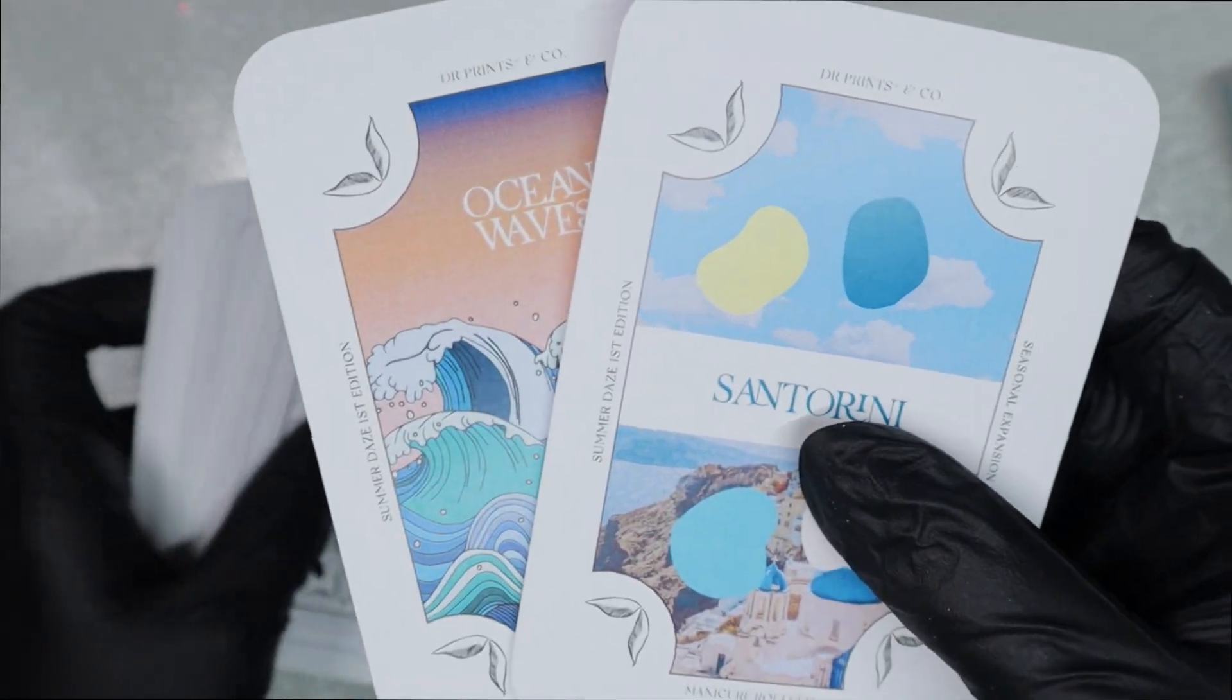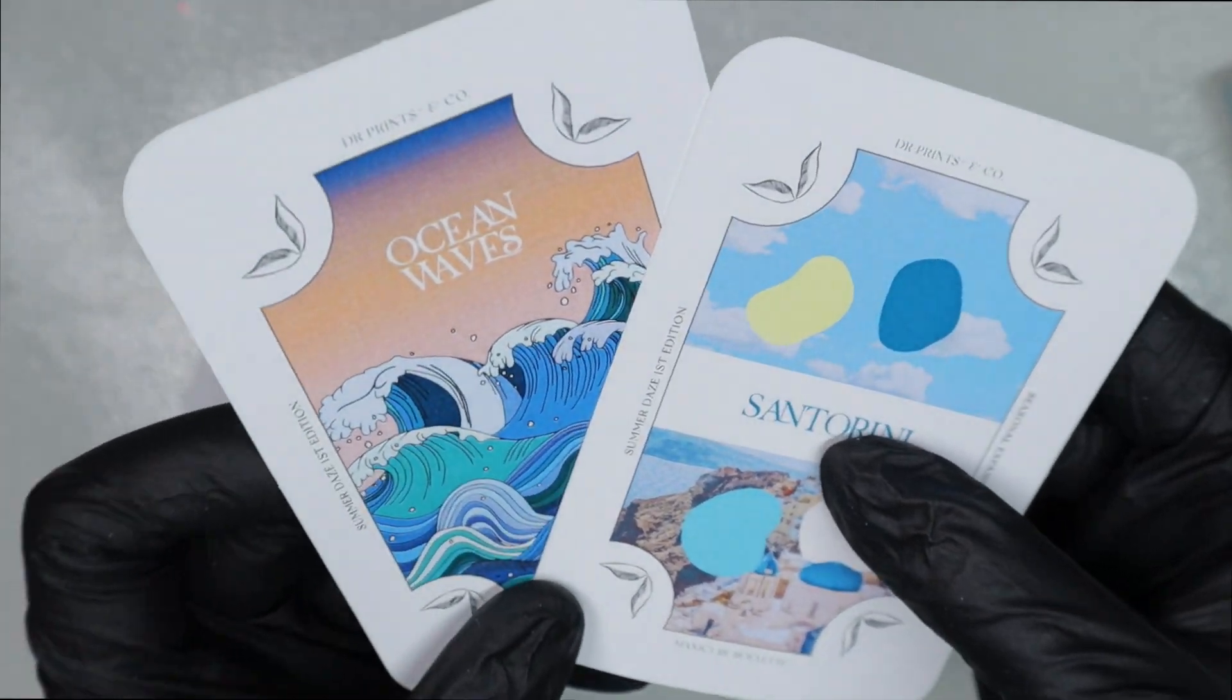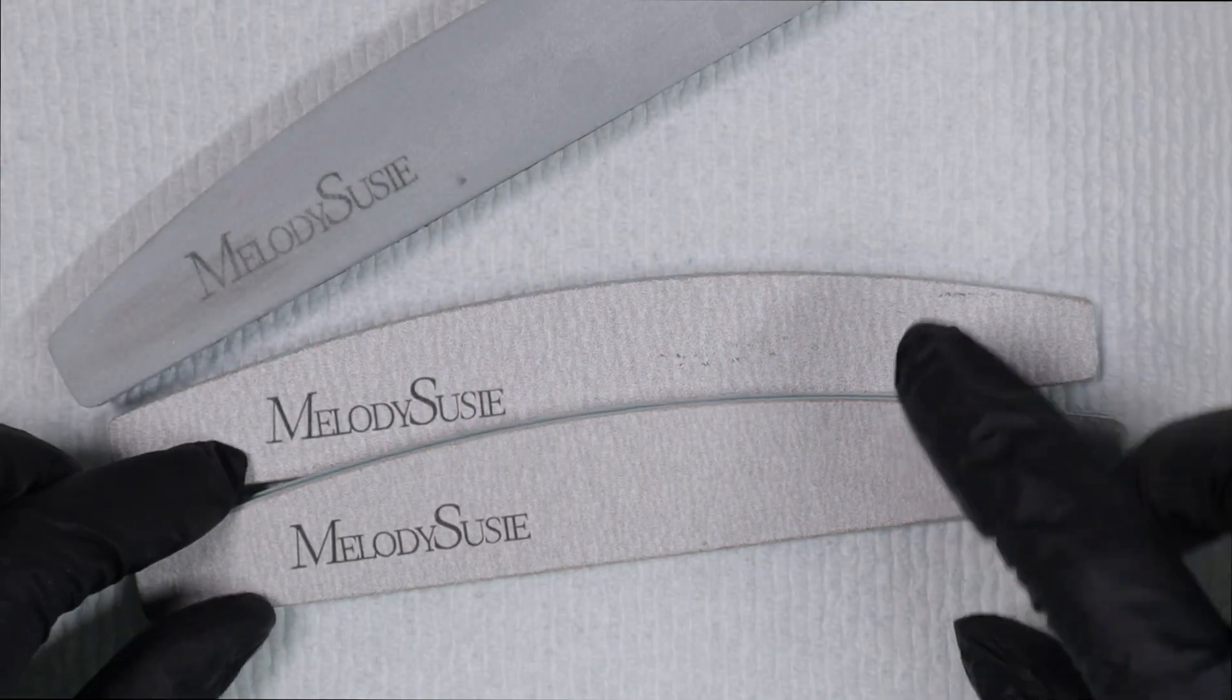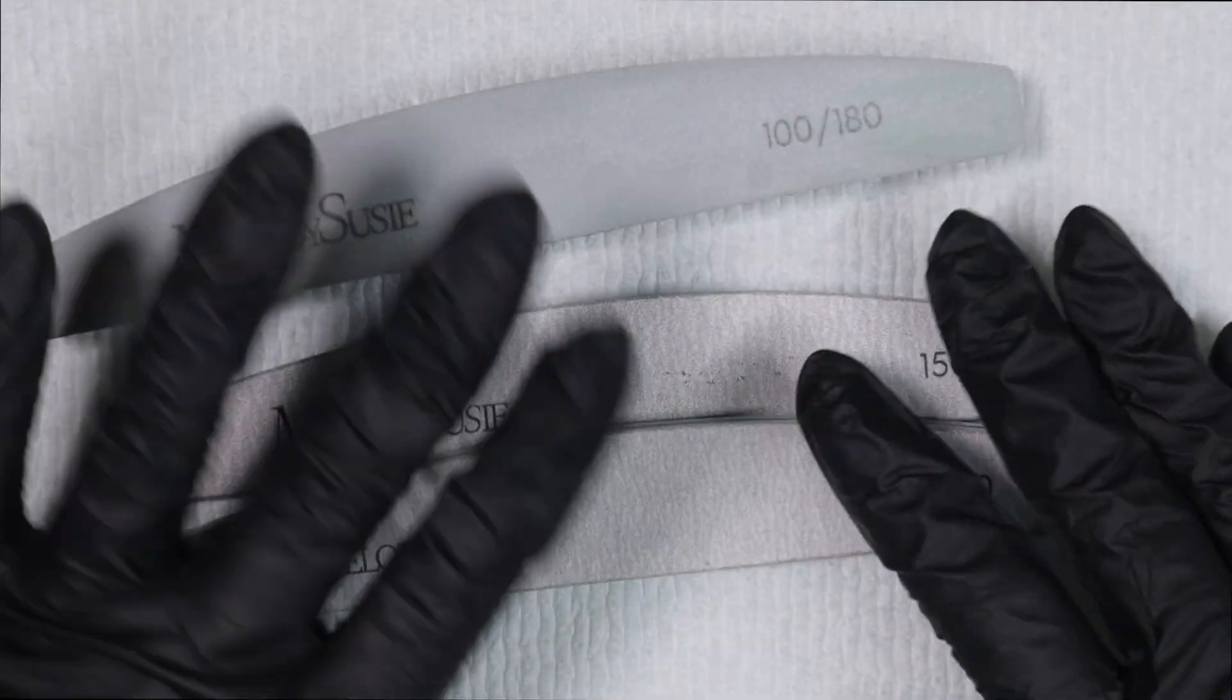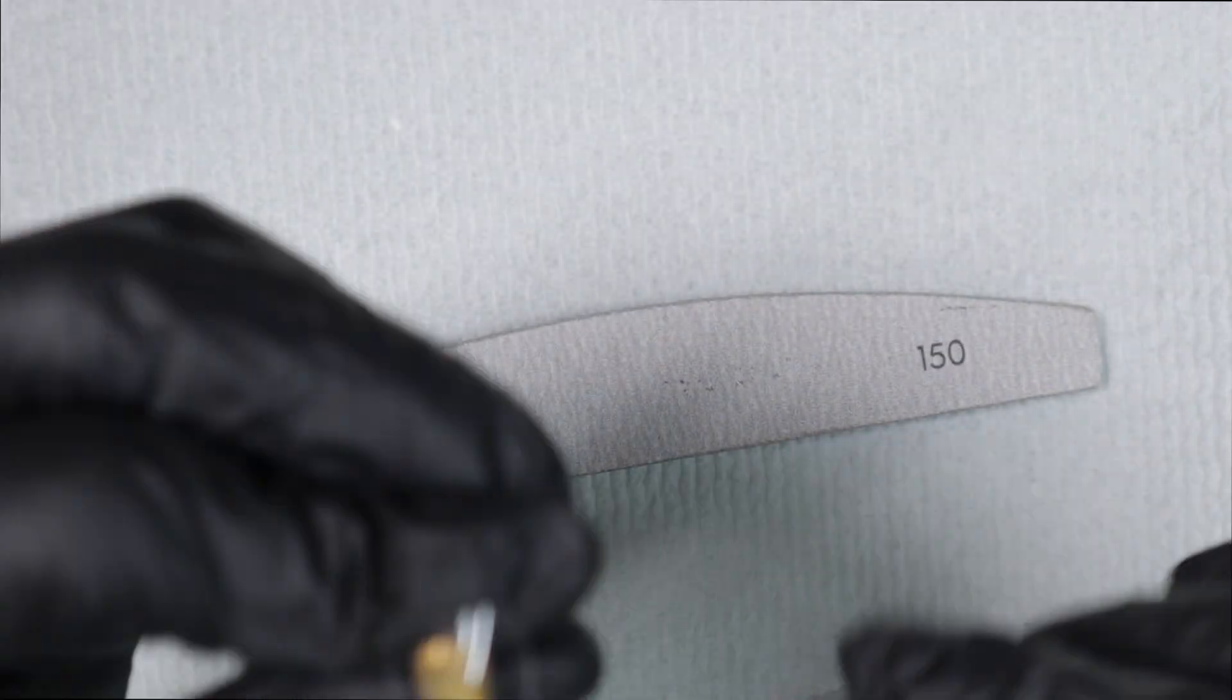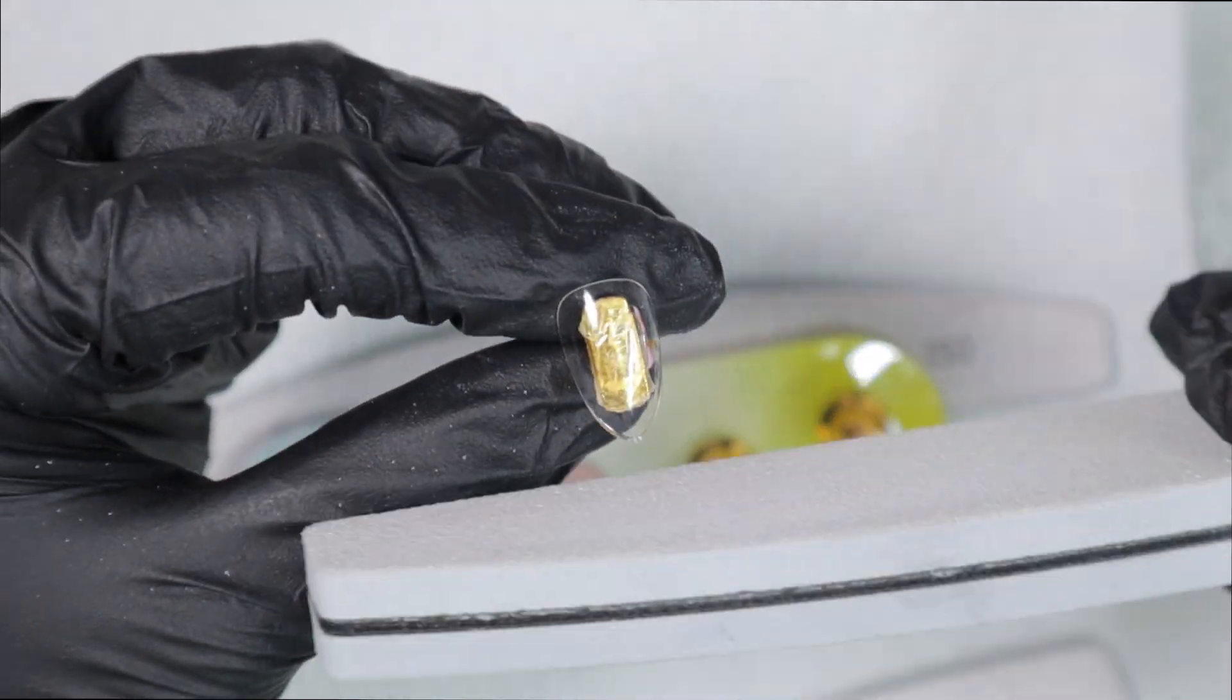So basically the way the collab works is you create a mani set using the color theme, color palette, and the art theme, and then post it either on Instagram or my Facebook group, or even email it to me, and you're automatically entered into the contest. So first things first, I'm going to prep my press-on nails. I'm going to use these Melody Susie nail files. They recently sent over a bunch of different files, so I'm playing around to see which ones I like best on press-ons.